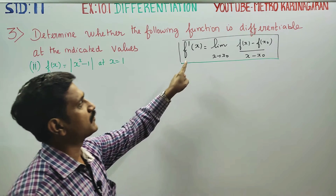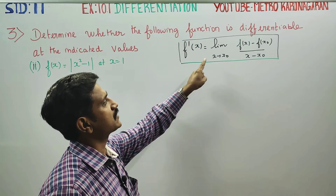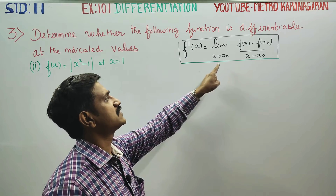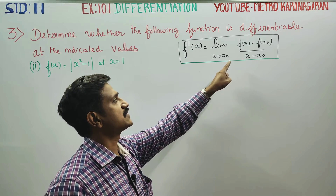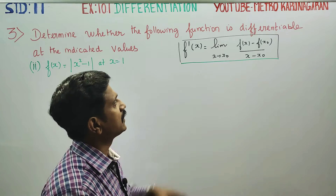The formula we use is: f dash of x is equal to the limit as x tends to x0 of f of x minus f of x0 divided by x minus x0.